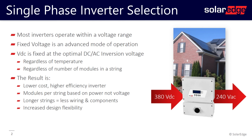The optimizers will do their job and adjust the output voltage of the modules to make sure the inverter always sees a steady, constant, fixed voltage. The voltage will change depending on the inverter model, but in this example the fixed voltage is 380 volts DC.